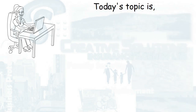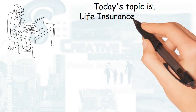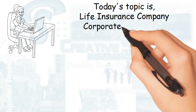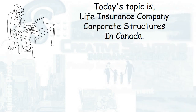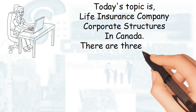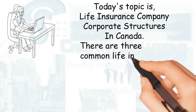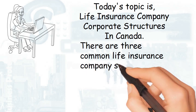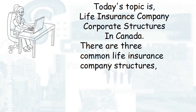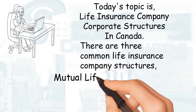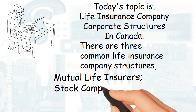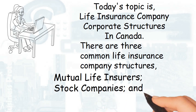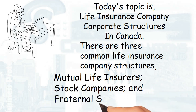Today's topic is Life Insurance Company Corporate Structures in Canada. There are three common life insurance company structures: mutual life insurers, stock companies, and fraternal societies.